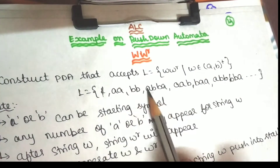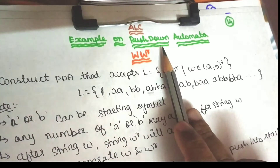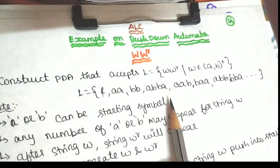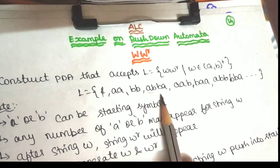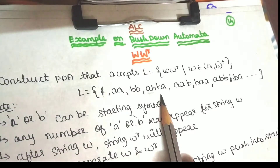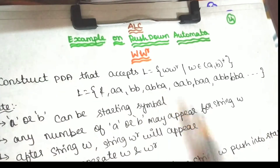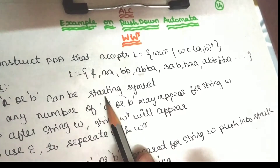In this language, you can do all the strings. A pushdown automaton can accept all such strings. It accepts strings by reaching the final state using the stack.